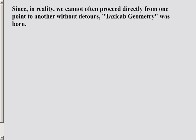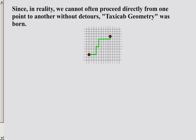The first branch that we're looking at is one that we've already talked about. Since, in reality, we cannot often proceed directly from one point to another without detours, taxicab geometry was formed. This was the simple idea that there may be obstructions in the real world that we must detour around. We cannot always pass through open spaces simply to get from one point to another. We must detour around things in order to accomplish the goal of reaching a destination.